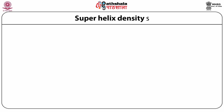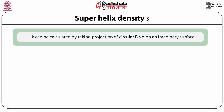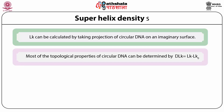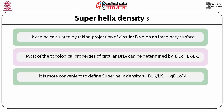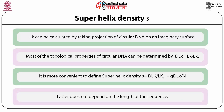Superhelix density sigma: LK can be calculated by taking the projection of circular DNA on an imaginary surface. Most of the topological properties of circular DNA can be determined by delta LK, which equals LK minus LK0. It is more convenient to define superhelix density sigma, where sigma equals delta LK divided by LK0, or gamma times delta LK divided by N. This does not depend on the length of the sequence.